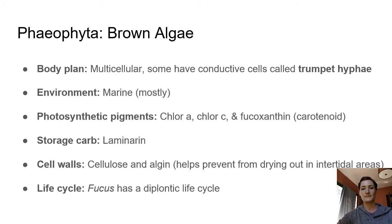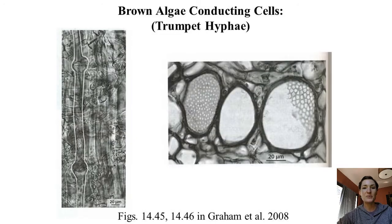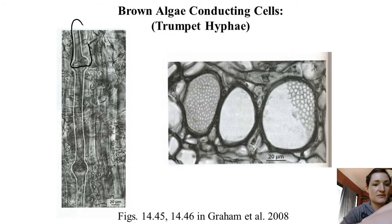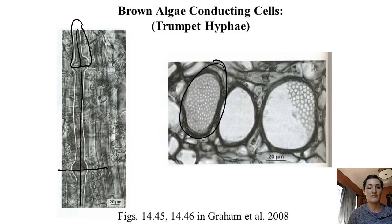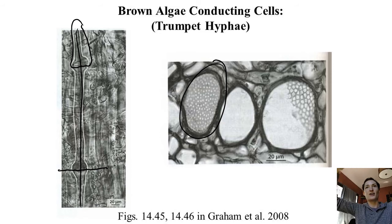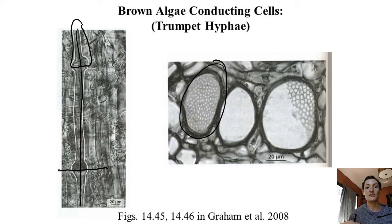Here is a picture of trumpet hyphae — you can see why they're called that because they swell at the end. In cross-section you can see sieve plates that align with each other so that sugars can be transported through. If you are a giant kelp hundreds of feet long, you're photosynthesizing up at the top where your blades are, but the stipe, holdfast, and lower portions won't be absorbing sunlight, especially in a kelp forest where sunlight doesn't penetrate that deep — so you need to send sugars down to the lower cells.